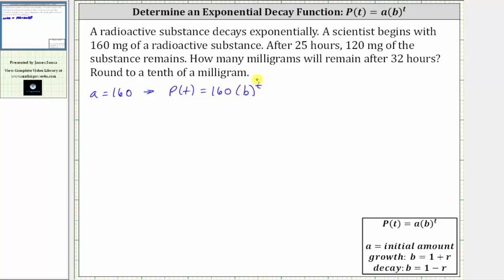We also know after 25 hours, 120 milligrams of the substance remains. As an ordered pair in the form of t comma P(t), the ordered pair would be 25 comma 120.